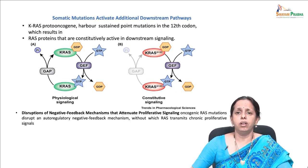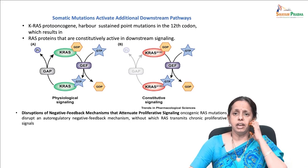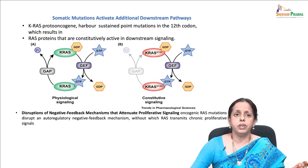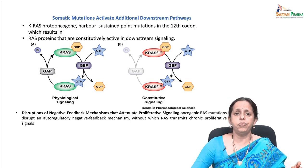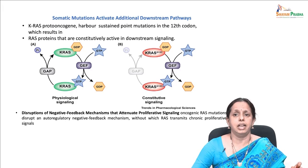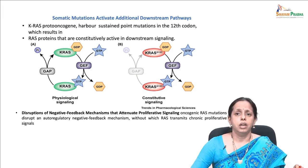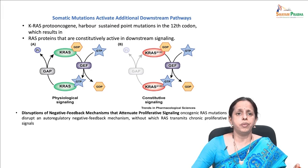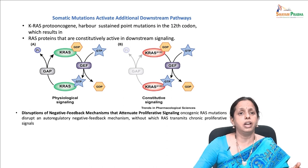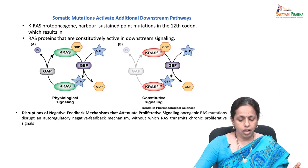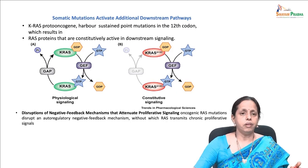The KRAS mutants lose the ability to bind GAPs and hence are locked in an active state, mediating potent oncogenic effects. Defects in these negative feedback mechanisms are capable of enhancing proliferative signaling. The prototype of this regulation involves the RAS oncoprotein itself — RAS mutations disrupt an autoregulatory negative feedback mechanism without which RAS transmits chronic proliferative signals.